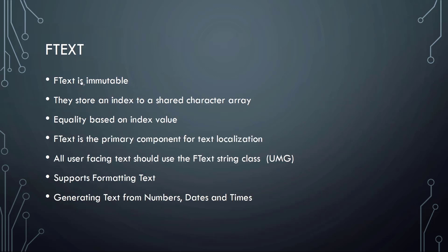FText is also immutable and they also store an index to a shared character array. The equality is also based on that index value, so we're not comparing the single characters of FName or FText but only the index values. FText is primarily used for text localization, so all user-facing text should be really used with the FText string class. You can see that in many UMG widgets that have text, they have FText parameters. FText supports formatting text and you can generate text from numbers, dates, and times.